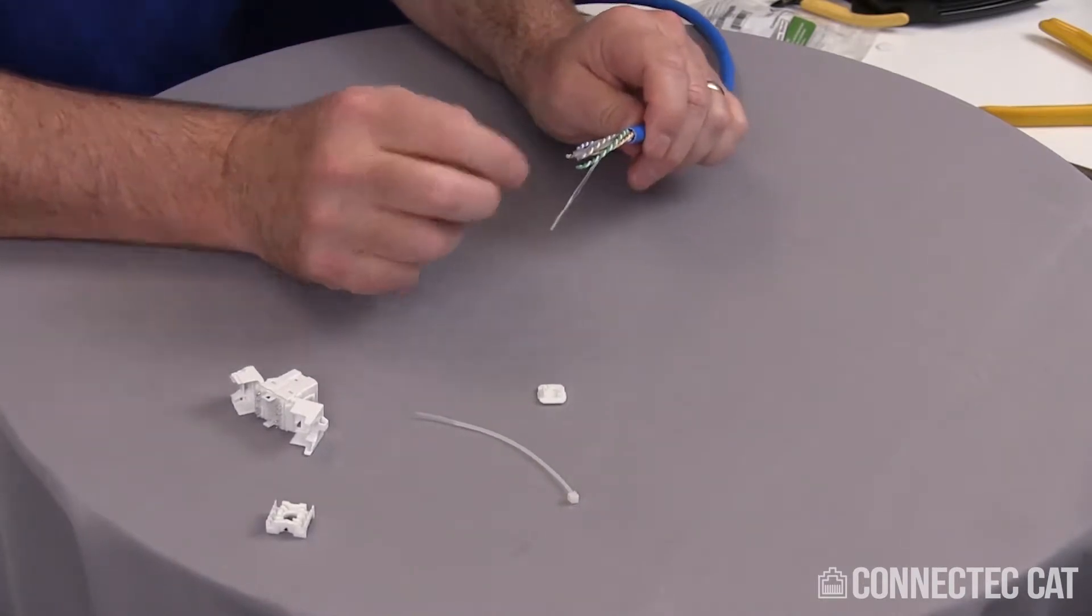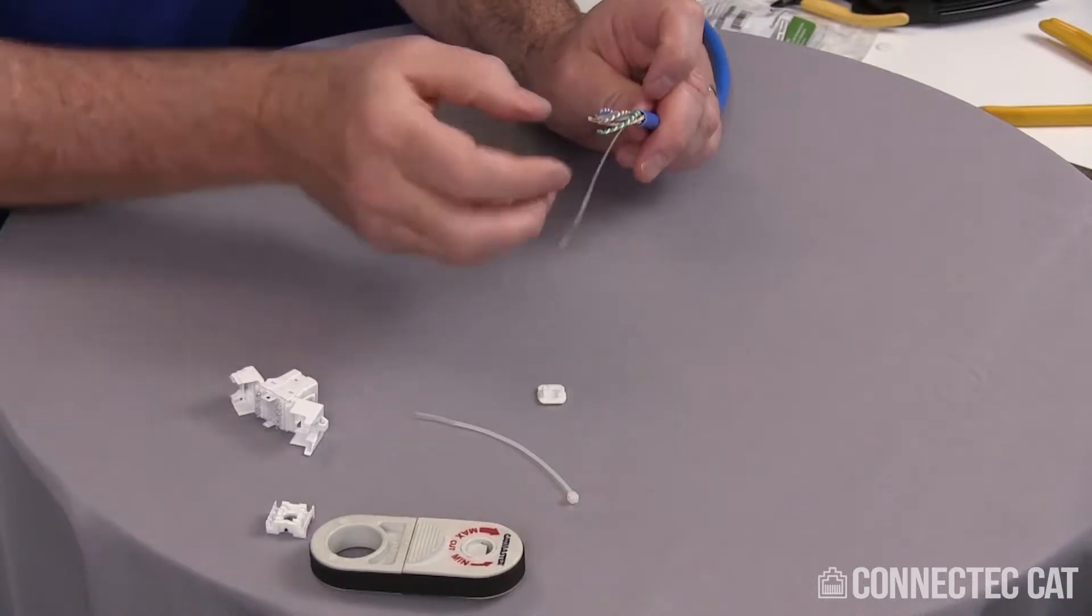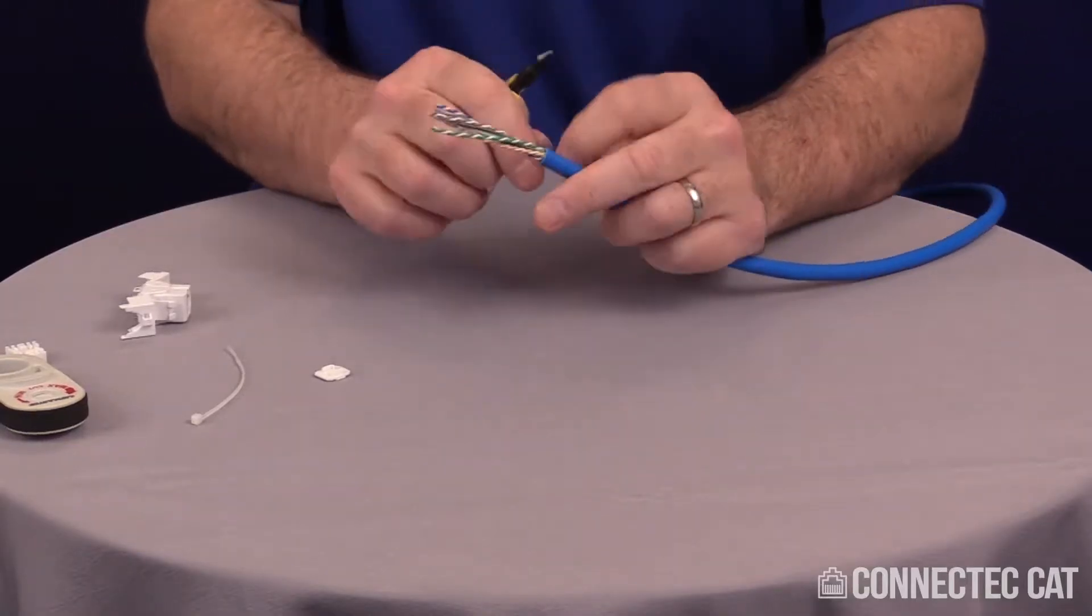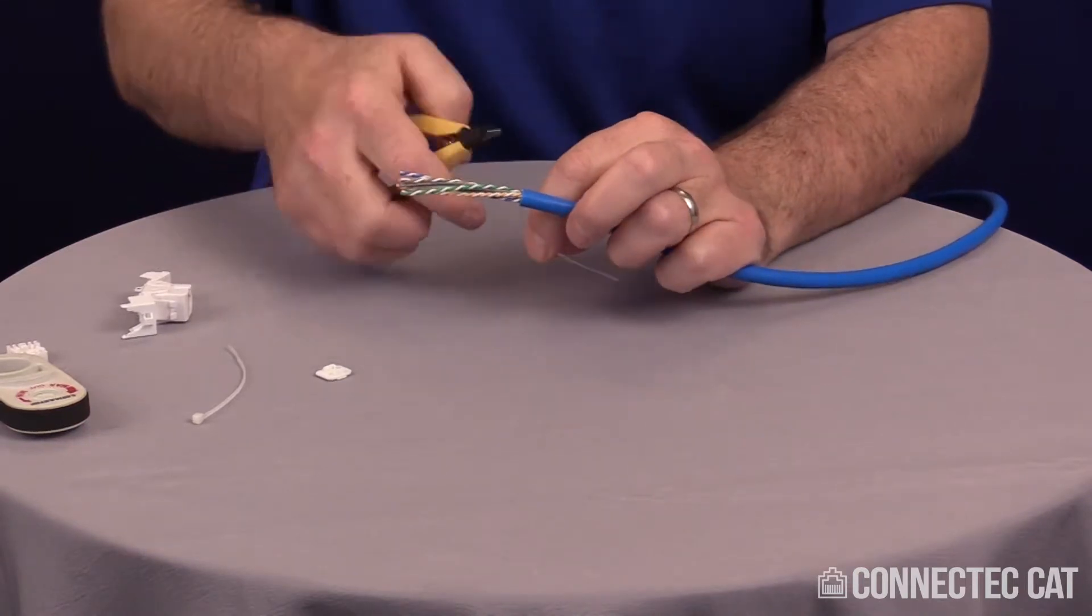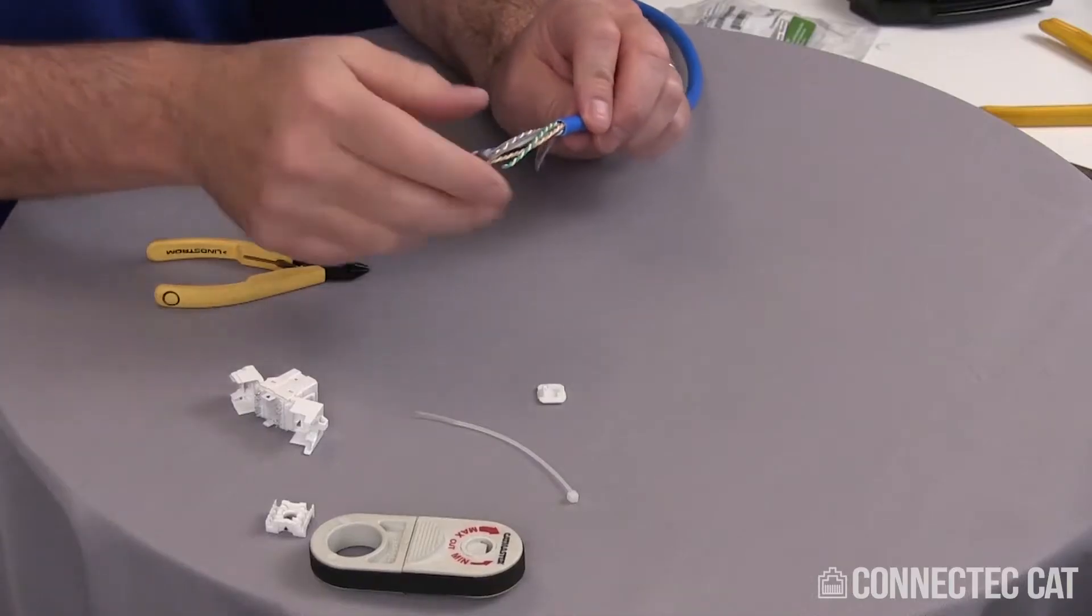The first thing you'll notice about Cat 6A cable is that it is very, very tightly twisted. I'm going to remove my separator in the middle. I'm not going to untwist my pairs yet. There will be a ripcord on the cable; you can remove the ripcord.